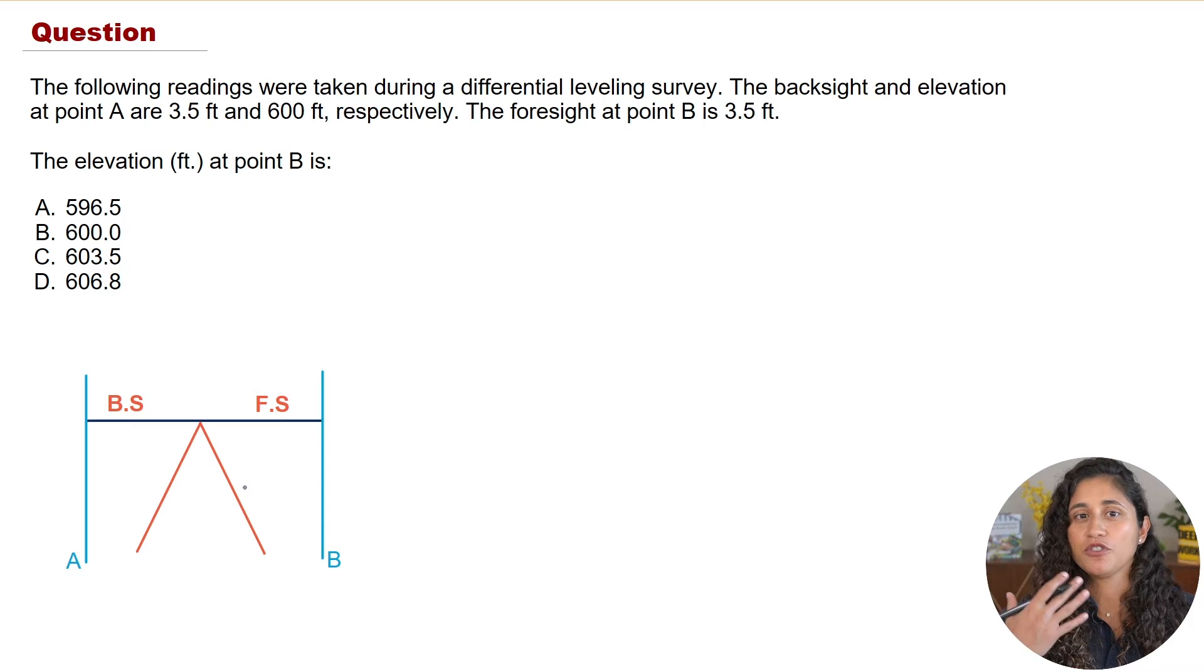Now let's go over some of the concepts before we dive into the equation. So when we are doing a differential leveling survey, what we usually do is we would put here a level, and then we would put a rod, a measuring rod, at a known point, meaning at a point where we know the elevation. For example in this problem we know the elevation at point A is 600 feet.